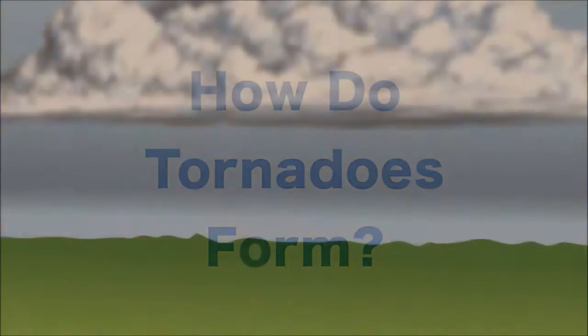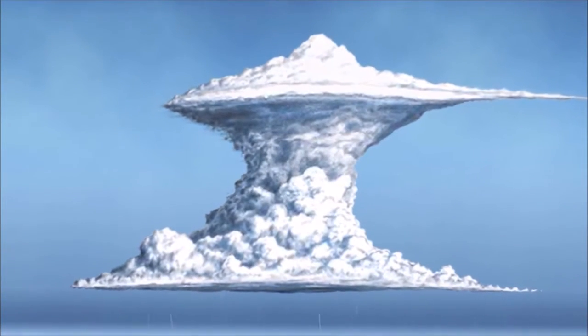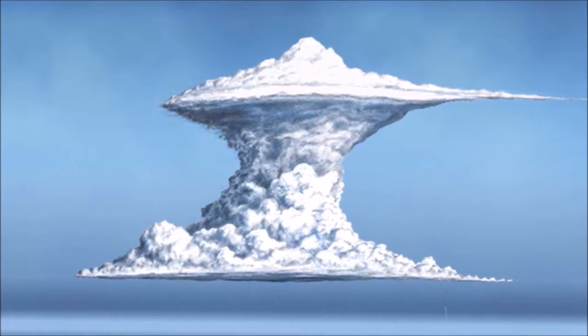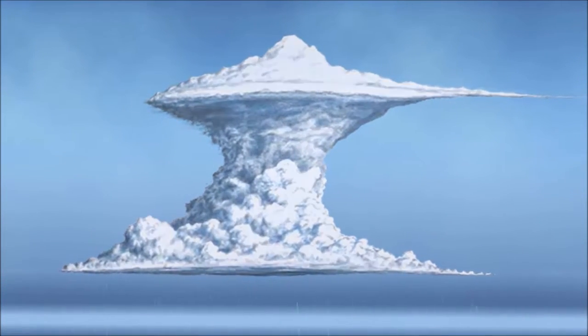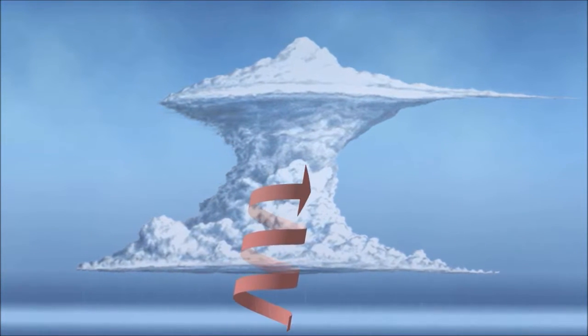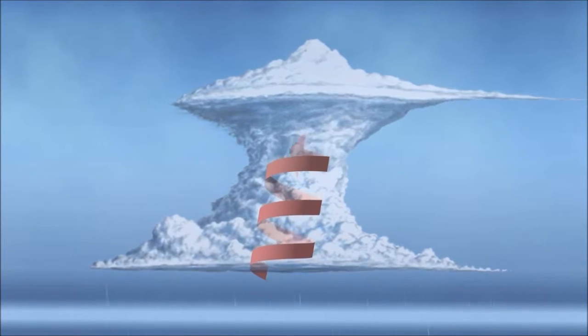Tornadoes develop out of what's called a supercell thunderstorm, which is a normal thunderstorm with a persistent rotating updraft at its core. This rotating updraft grows into something called a vortex, a spinning column of air at the center of the storm.